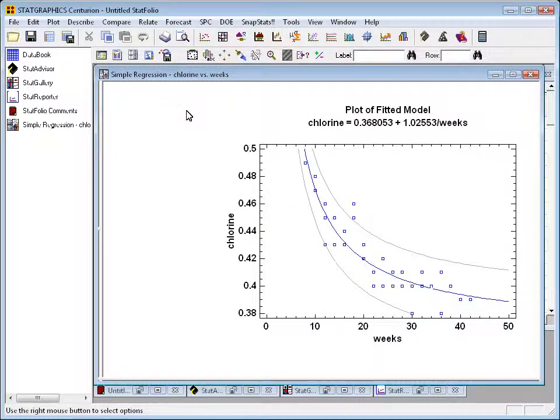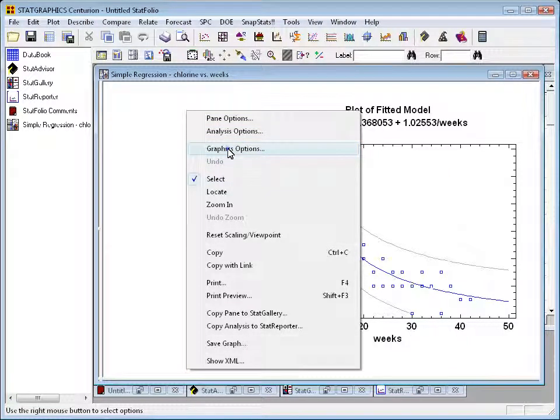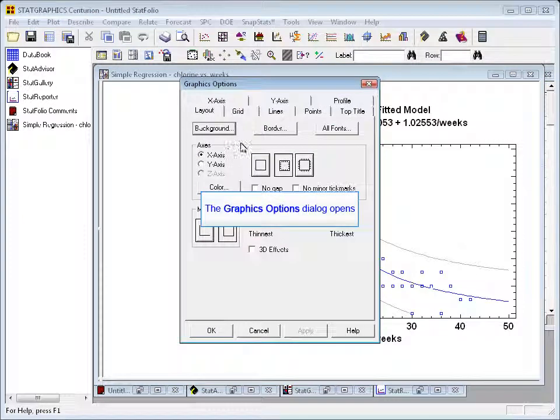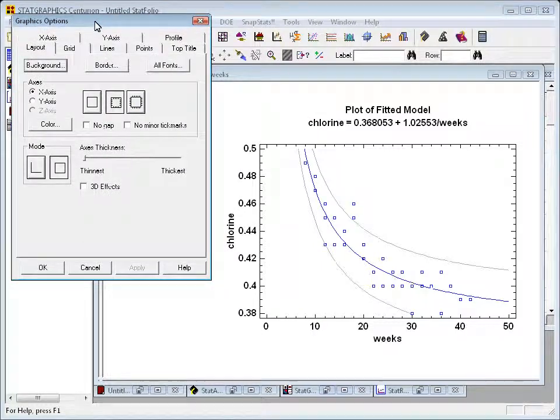I'll now go anywhere within the window, press the right mouse button, and on the pop-up menu choose the third option, which is graphics options. This brings up a tab dialog box with various tabs. I'm going to drag that to the upper left hand corner so we can see the changes as we make them.